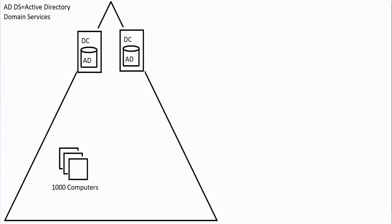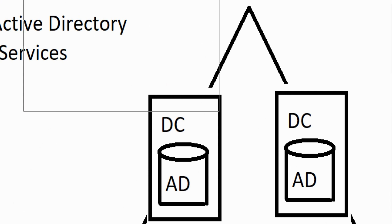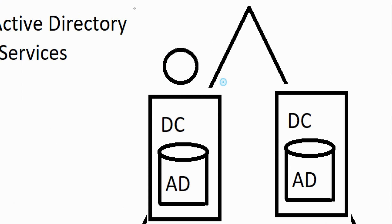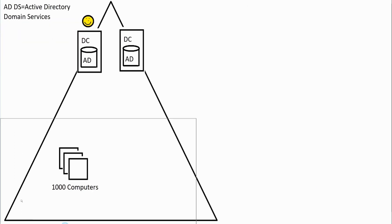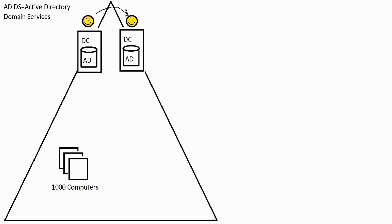An interesting thing about domain controllers is that they replicate. When you create a user account on one domain controller, replication occurs between all of them. So a user could log on to any machine and authenticate with any domain controller, because that user account exists on all of them through replication.